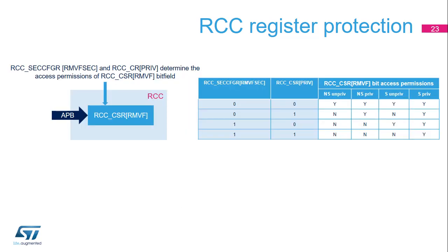In order to explain the access permissions, let us focus on the Remove Reset Flag bit, called RMVF, present in the RCC CSR register. By setting this bit to 1, all reset status flags are cleared. The table on the right indicates the access permissions of this particular control bit according to the RMVFSEC attribute and the RCC privilege attribute.